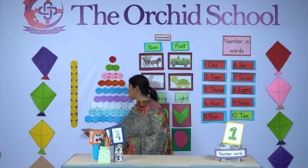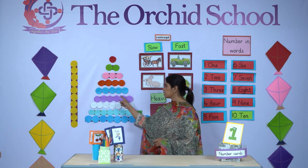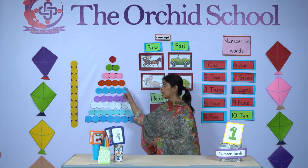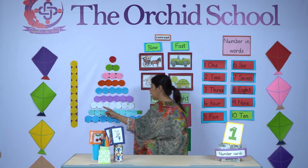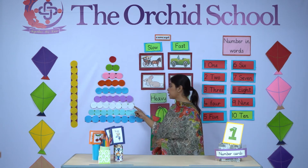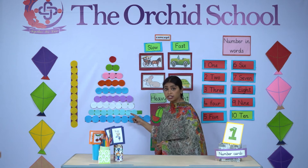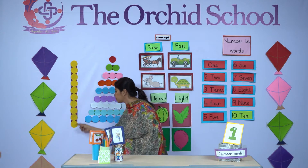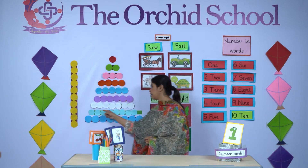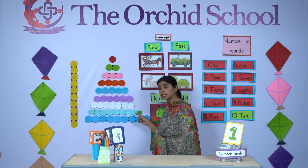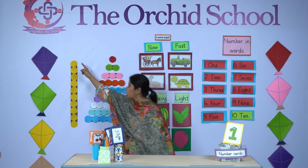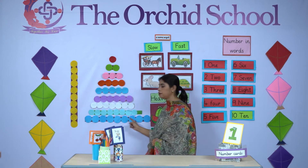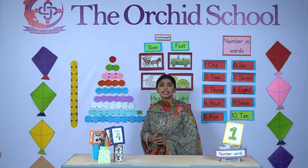A bar of ten and six makes sixteen. A bar of ten and seven makes seventeen. A bar of ten and eight makes eighteen. A bar of ten and nine makes nineteen.